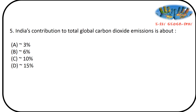Next question: India's contribution to total global carbon dioxide emission is about? Options: 3%, 6%, 10%, 15%. Answer is option B — 6%. According to the latest data it is 7%, so if 7 is given as an option, choose 7. The largest emitter of carbon dioxide is China, then USA, then India, and Russia is fourth.